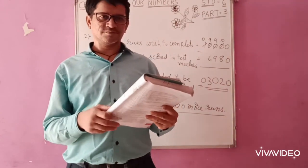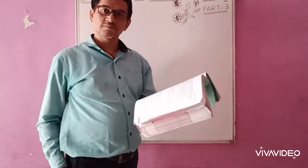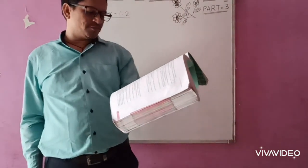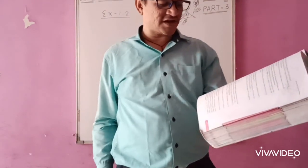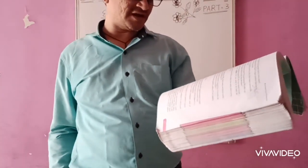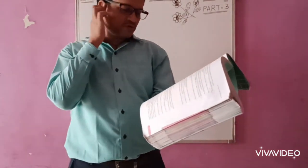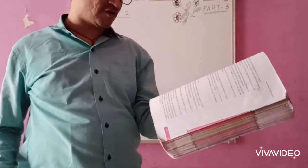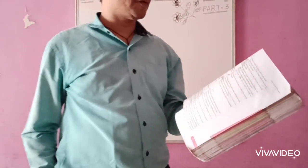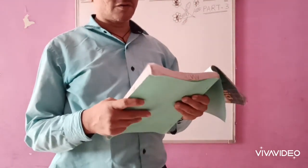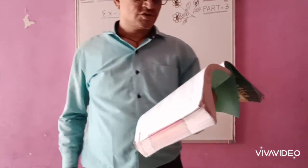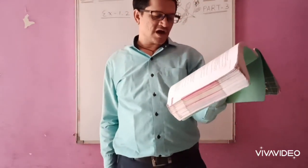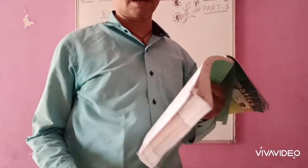So next, fourth. So in fourth problem, a bookstore sold books worth 2,85,891 in the first week of June and books worth 4,00,768 in the second week of the month. How much was the sale for two weeks together? In which week was the sale greater and by how much? So here, you compare the numbers. So first question is, how much was the sale for the two weeks together?